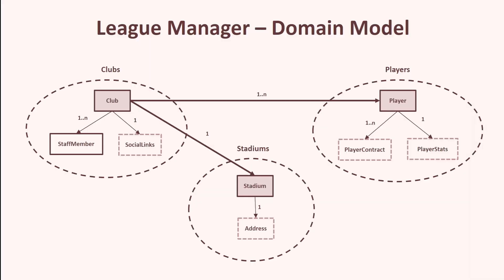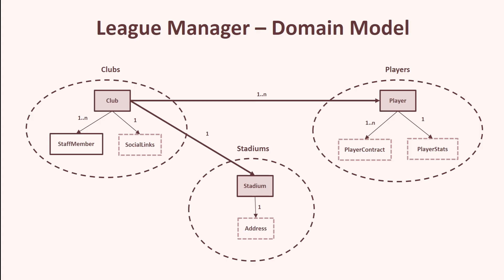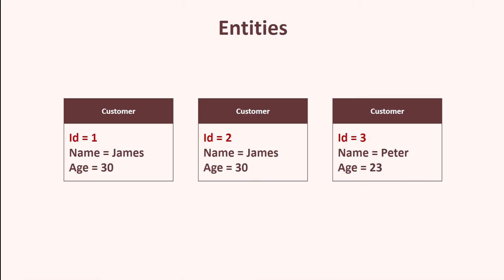Welcome back. Today we are focusing on the foundational structure of the application — the domain layer. We are modeling a domain model of a football league application, focusing on three main aggregates: clubs, players, and stadiums. We will be applying tactical DDD patterns like aggregates, entities, and value objects to ensure our model is tightly structured and enforces its own rules. Let's first understand the difference between entities, aggregates, and value objects.